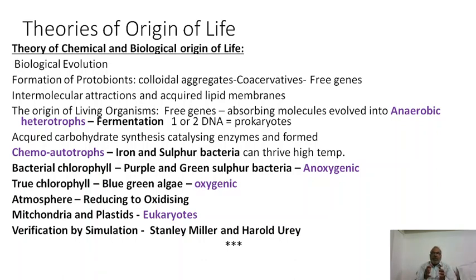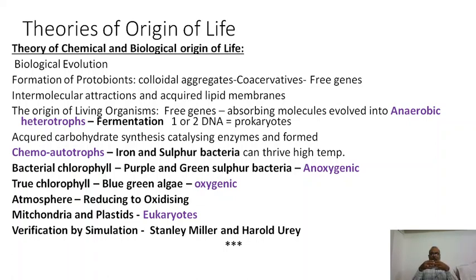At some places, organisms evolved a kind of light-fixing pigment known as bacterial chlorophyll. This bacterial chlorophyll might have resulted in the formation of purple or green sulfur bacteria. These purple and green sulfur bacteria fix carbon and hydrogen using energy grabbed from sunlight. However, by this method no oxygen was released — hence these organisms are called anoxygenic photoautotrophs, because they utilize light energy but do not liberate oxygen.